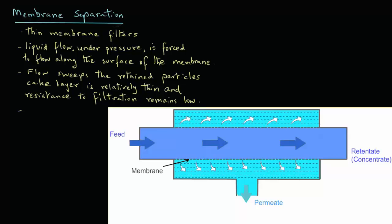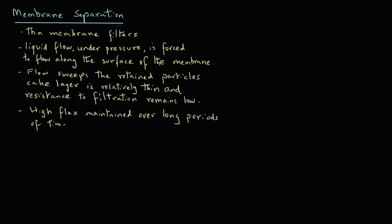So, in membrane filtration, because of the flow of the liquid, there is a high flux that is maintained over a long period of time. Recall that the flux is the permeate that is flowing through the membrane. In contrast to dead-end filtration, the membrane separation systems are closed systems. They are not open to the atmosphere. And the particle size that is separated is less than 10 micrometers.